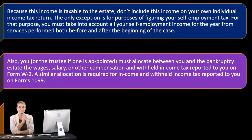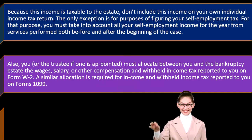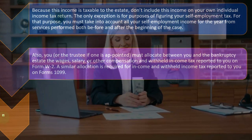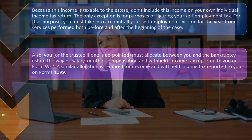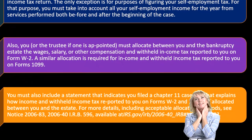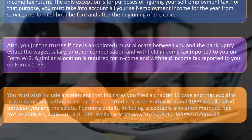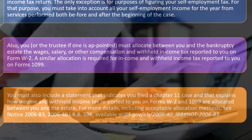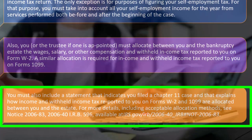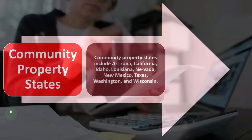You, or the trustee if one is appointed, must allocate between you and the bankruptcy estate the wages, salary, or other compensation and withheld income tax reported on Form W-2. A similar allocation is required for income and withheld income tax reported on Form 1099. You must also include a statement indicating you filed a Chapter 11 case and explaining how W-2 and 1099 income and withheld taxes are allocated between you and the estate. For details on acceptable allocation methods, see Notice 2006-83.